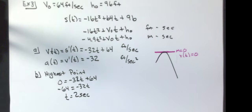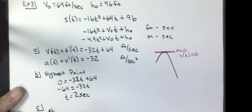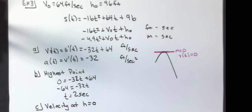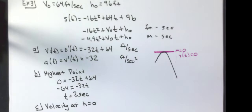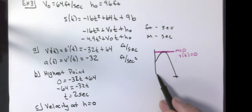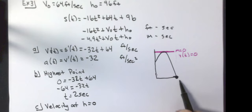Part C asks: with what velocity will the stone strike the river? Here I have to go back and use some algebra. Velocity at height equals zero — I need to figure out when it's going to hit the river. I go back to my original function and find its x-intercept. I put that time into my velocity equation, and that'll tell me the velocity at that given time.